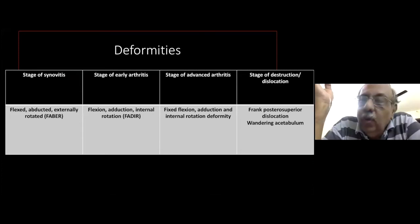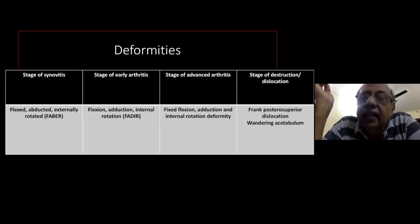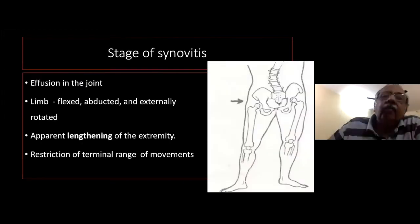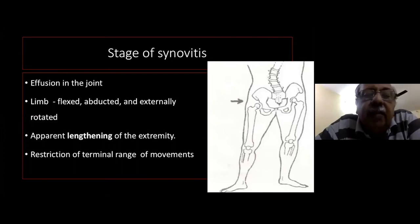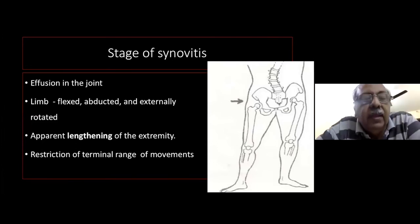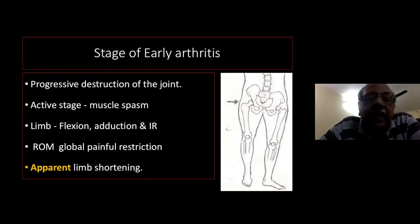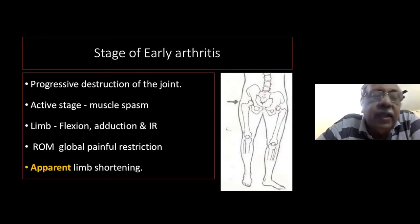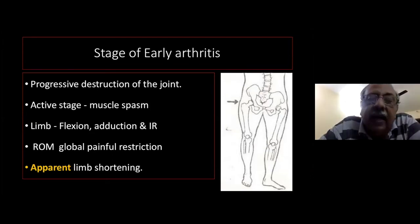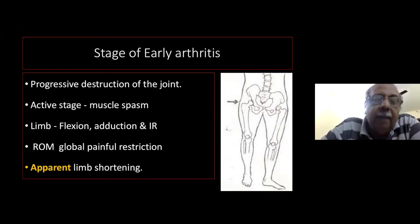In early stages (synovitis), there is flexion-abduction-external rotation deformity due to joint effusion, with apparent lengthening and restriction of terminal range of movement. In early arthritis, flexion-adduction-internal rotation deformity occurs because of selective spasm of the flexors and adductors and the tendency of the patient to lie on the side. There is global restriction of movements and apparent shortening of the limb.